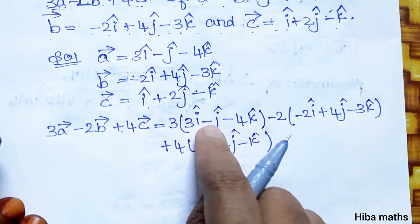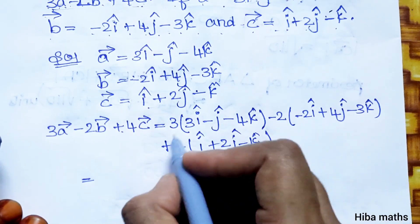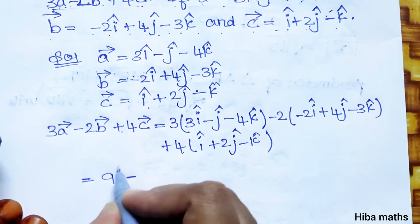Now multiply 3 inside, minus 2 inside, and 4 inside. Three times 3 is 9i, three times 1 is 3j, minus three times 4 is 12k.